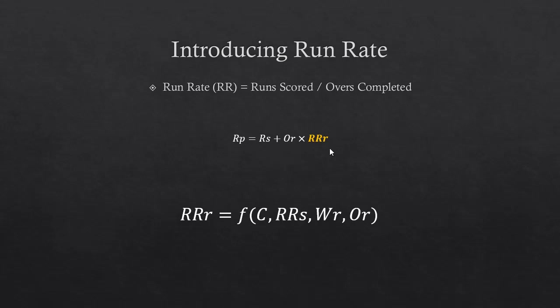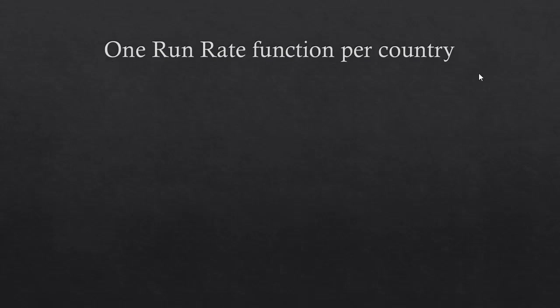We define run rate remaining (RRR) as a function f of: country, run rate already scored, wickets remaining, and overs remaining. For example, if your current run rate is 6 runs per over and you have 8 wickets in hand with only 10 overs remaining, you're in an aggressive position with many wickets left and few overs, so you might bat much faster in the remaining overs. That's the intuition behind this function.